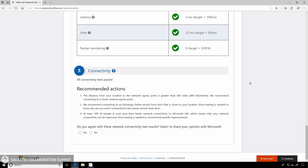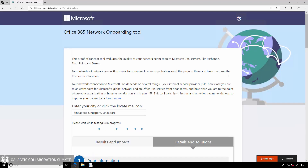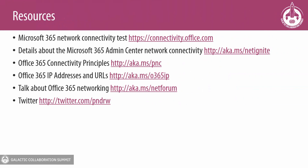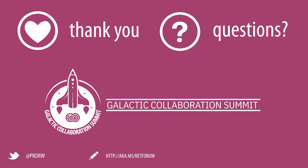You can access that network connectivity test tool for a one-off test at connectivity.office.com. If you want to get testing from our passive network measurements, you can read more information at aka.ms/netignite and sign up for the preview program. The connectivity principles URL is there, as are the IP addresses and URLs for Office 365. If you want to chat about Office 365 networking or comment on any of these tools, I'd recommend using the tech community — a link to our forum is aka.ms/netforum. Thank you so much. I hope you enjoyed the presentation and get good value out of the tools shown here today.